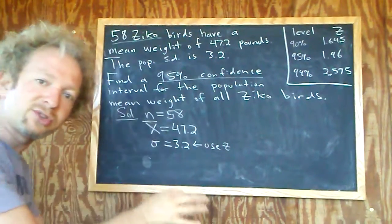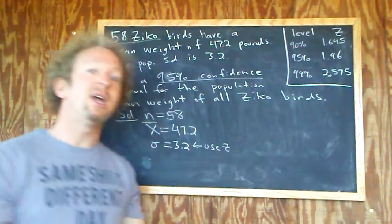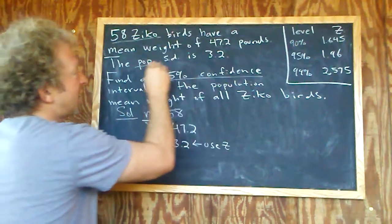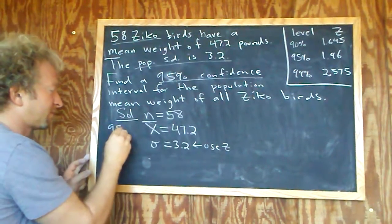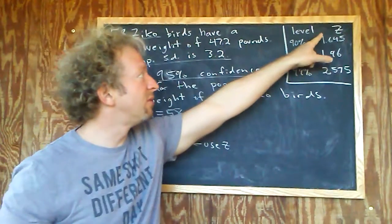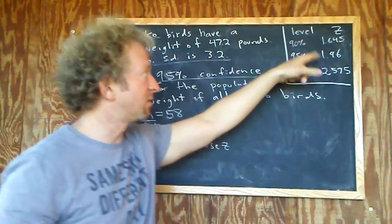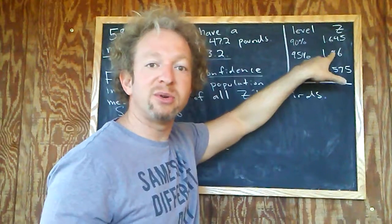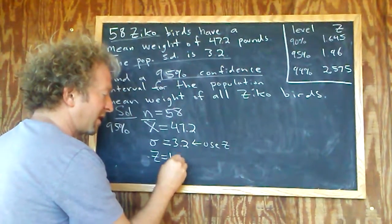In other words, we're going to use the standard normal distribution to find a confidence interval. If they gave us the sample standard deviation it would be different, we would use the t distribution. It's 95%, so to make it easy I wrote down the common critical values for the z distribution. In this case it's 95%, so our critical value is 1.96.